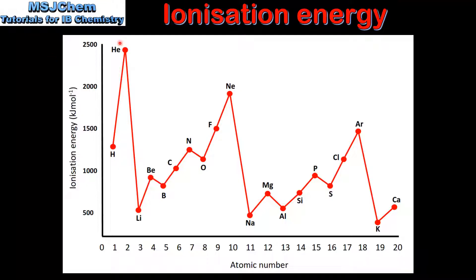As we go down a group, for example group 18, we can see that the ionization energy decreases from helium to neon to argon. This occurs due to the increase in atomic radius as we go down a group. As we go from left to right across a period, for example period 2 starting with lithium, we can see that the ionization energy increases. This is due to the increase in nuclear charge and the decrease in atomic radius.